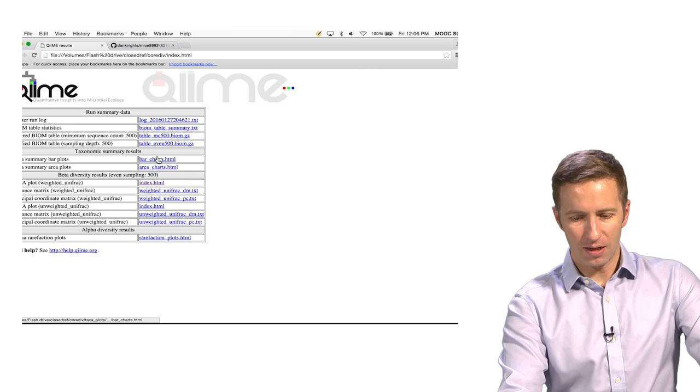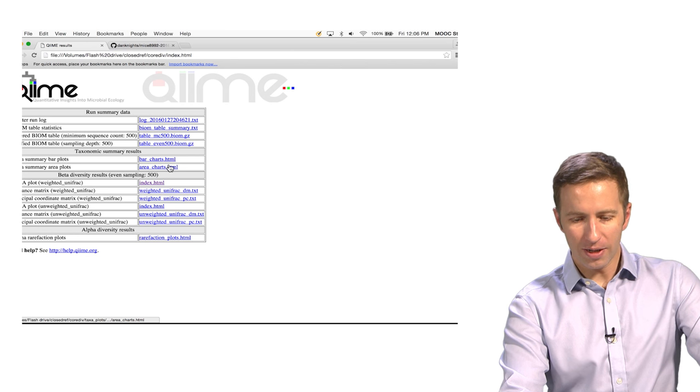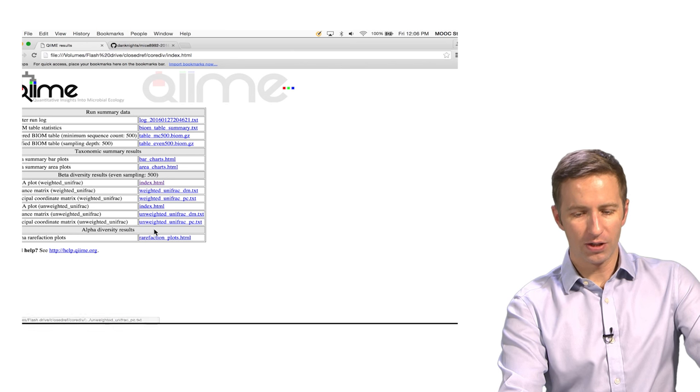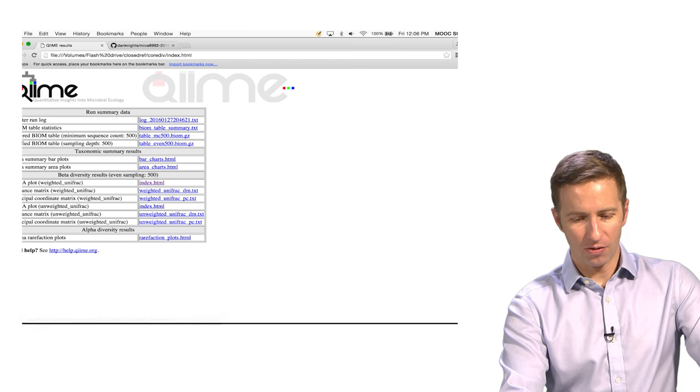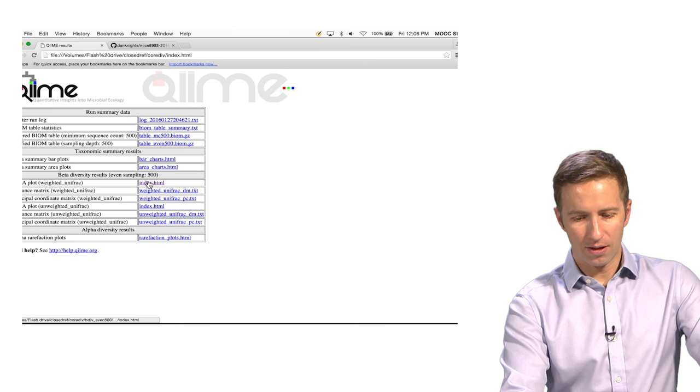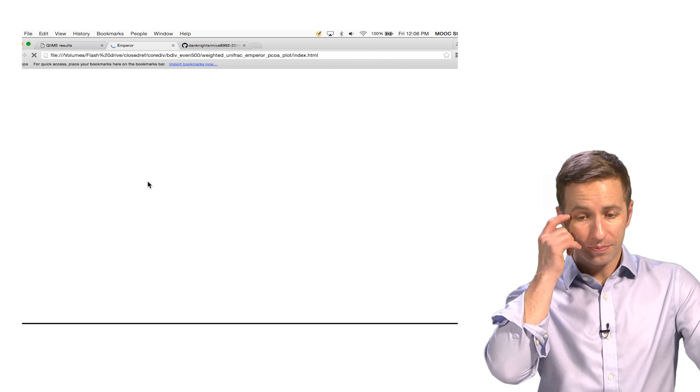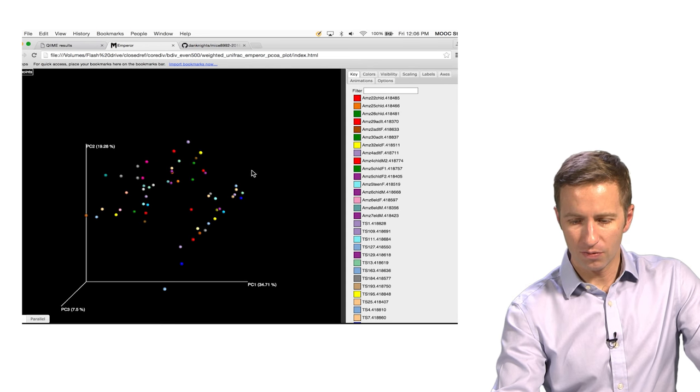It gives you taxonomic information, alpha diversity, beta diversity, and so on. But we're just going to look at beta diversity right now. So if you go to where it says PCoA plot and click index.html,